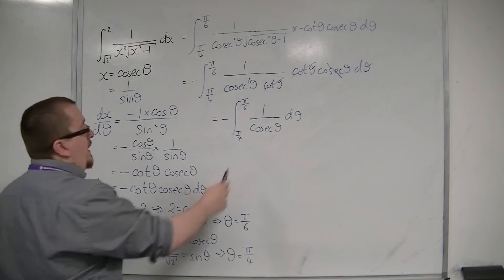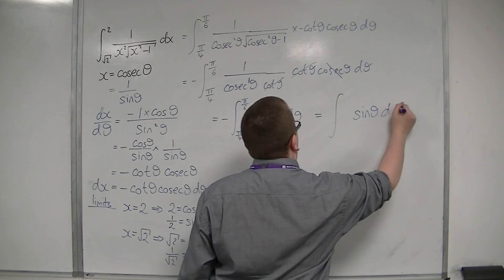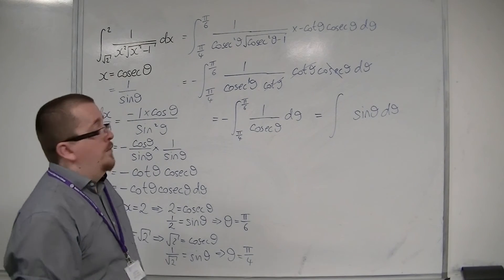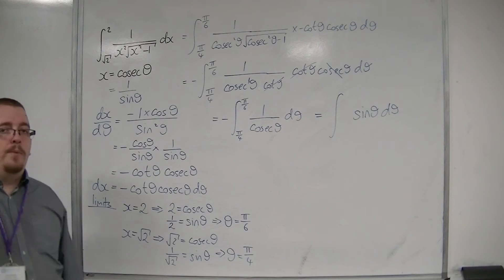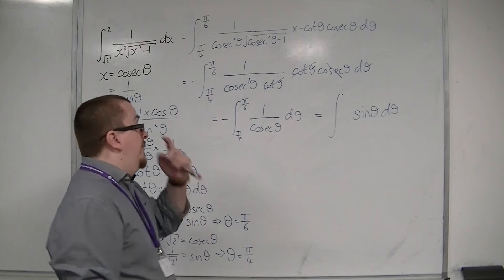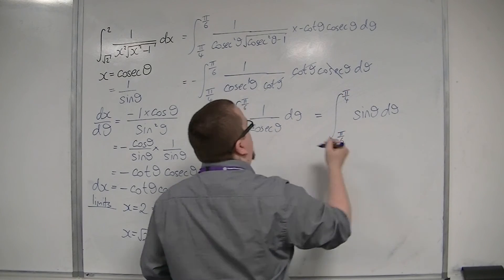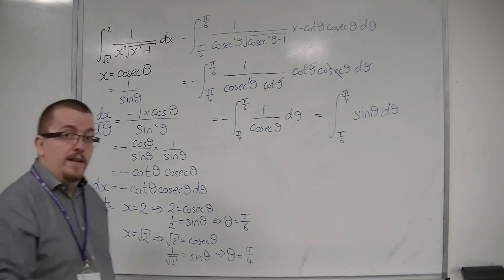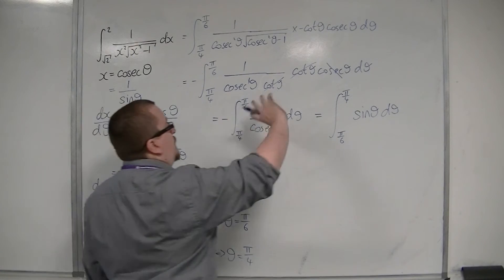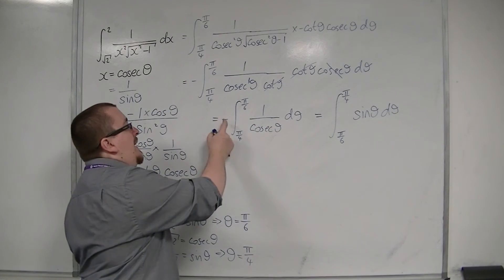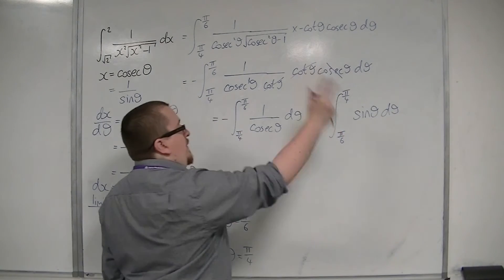Now 1 over cosec is sine. And you'll also notice that pi over 6 is actually less than pi over 4. So we've got the higher limit on the top of the integral than on the bottom. You can flip these limits around as long as you then stick a minus sign in front. That's one of the things you can actually do. We very rarely use that process, but it is a process that works. So I can flip the limits around, and I stick a minus sign in front, but that cancels with that minus sign. So I've got rid of the minus sign, and this is the integral I now have.